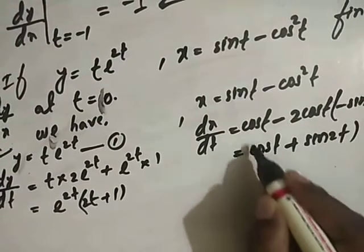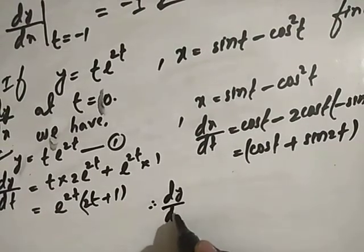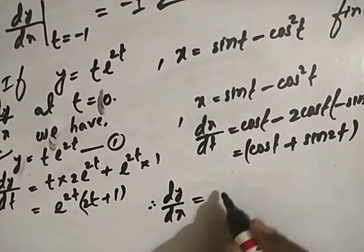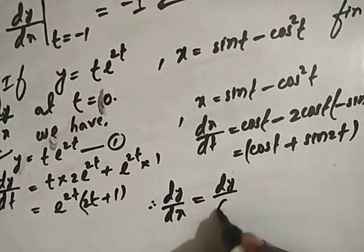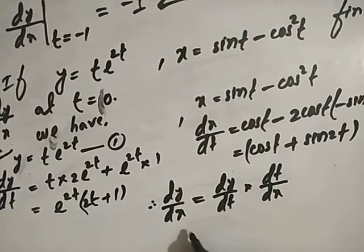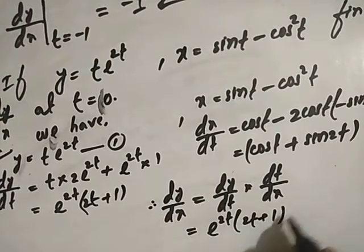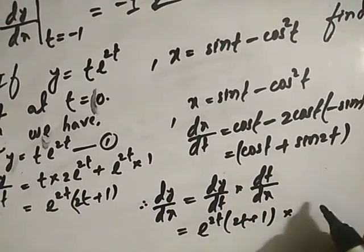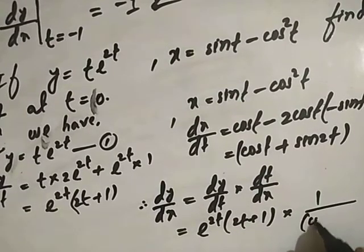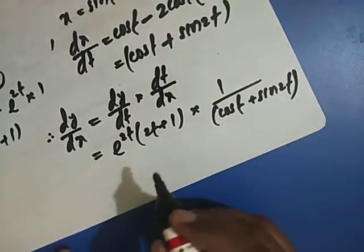Therefore, dy/dx equals dy/dt times dt/dx. So dy/dx equals e to the power 2t times (2t plus 1), divided by (cos t plus sin 2t).